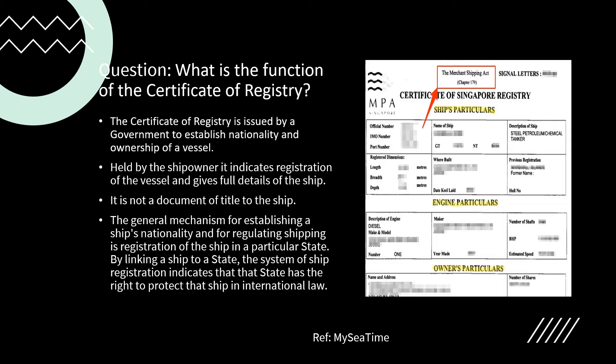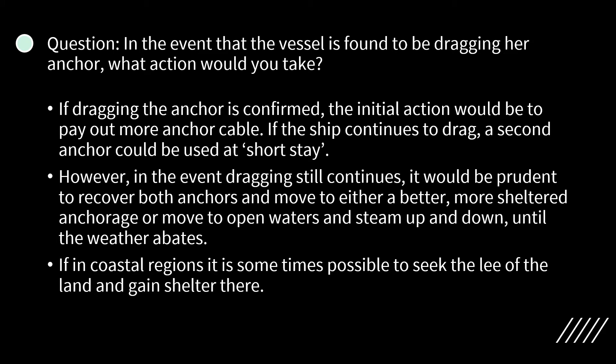The ship owner decides beforehand on what nationality the ship will be registered under, and the government then authorizes the ship owner to register their vessel. The certificate is held by the ship owner and indicates the registration of the vessel — giving full details such as official number, IMO number, name, description, length, breadth, depth, and where it was built. A copy is often displayed on the ship's bridge. It is not a document of title to the ship — just because you have a certificate of registry does not make you the owner of the vessel.